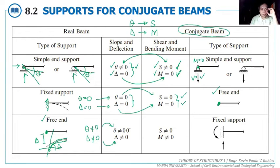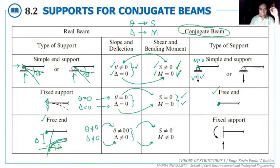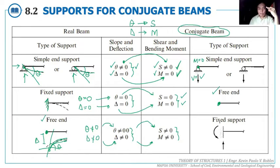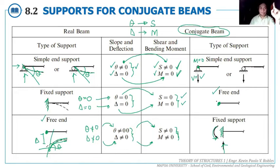Since both slope and deflection at the free end are non-zero, the corresponding shear and moment on the conjugate beam are also non-zero. What type of joint has both non-zero shear and non-zero moment? That would be a fixed support. Therefore, whenever you have a free end in your real beam, the corresponding conjugate beam joint is a fixed support.